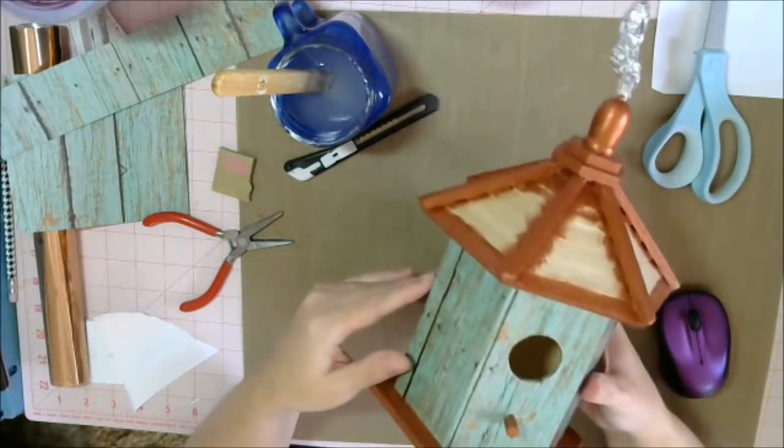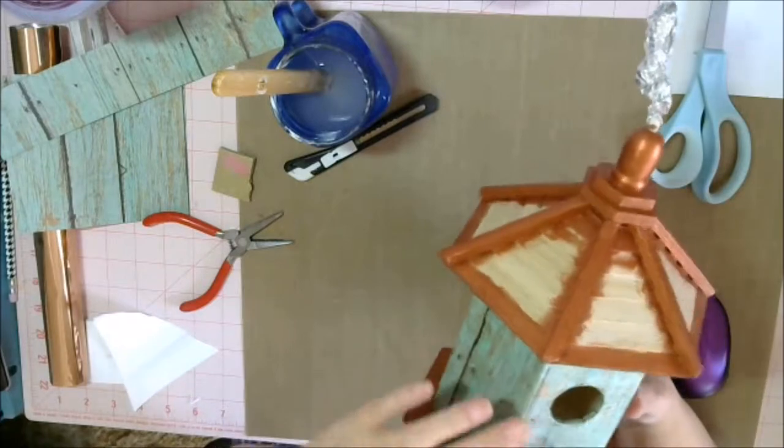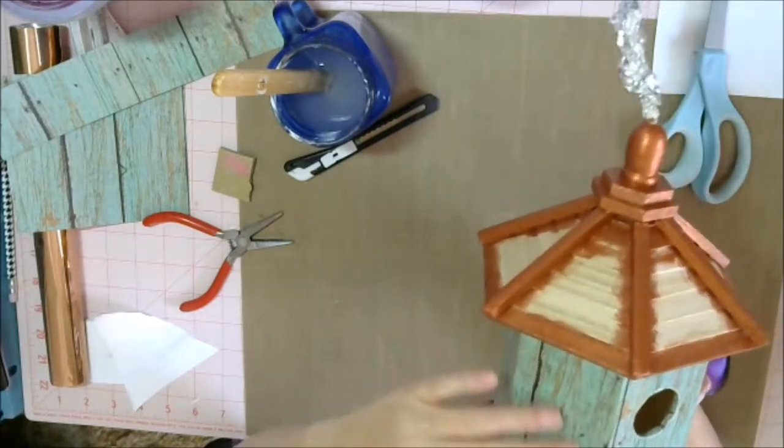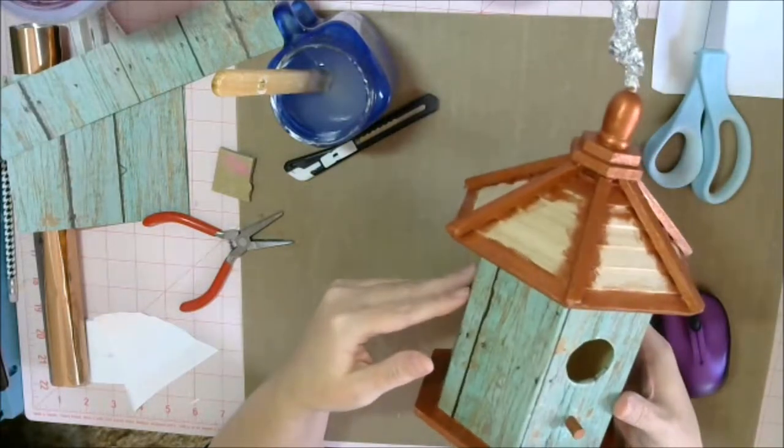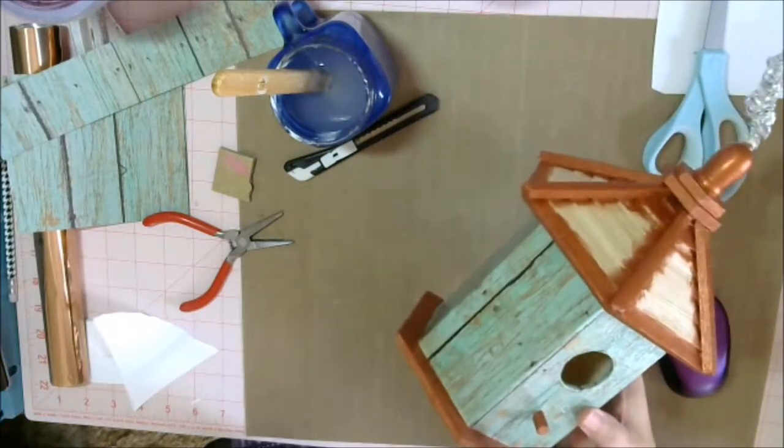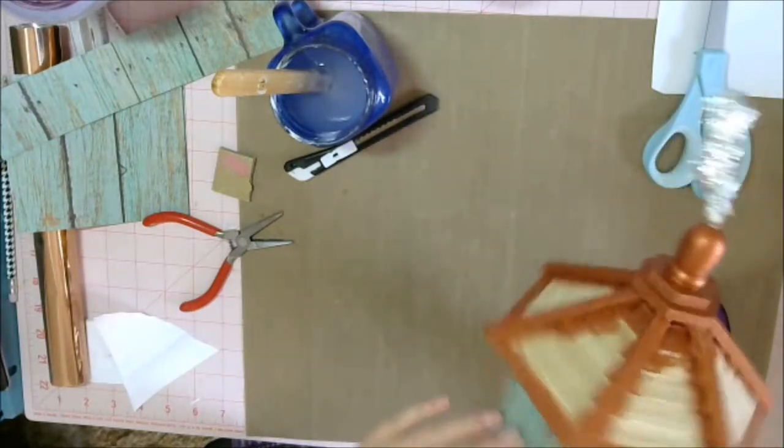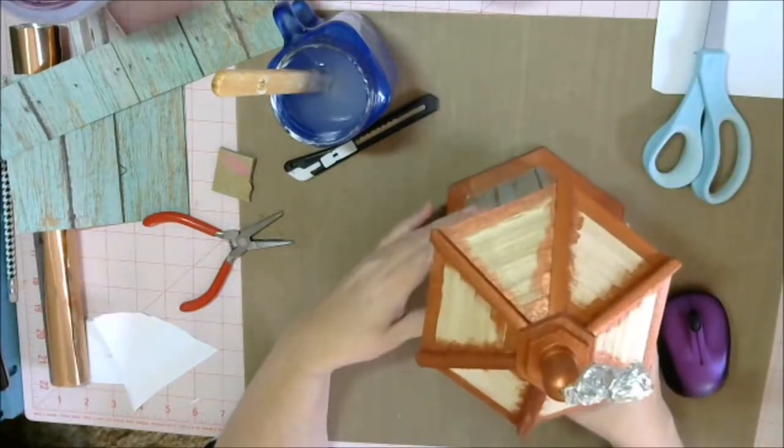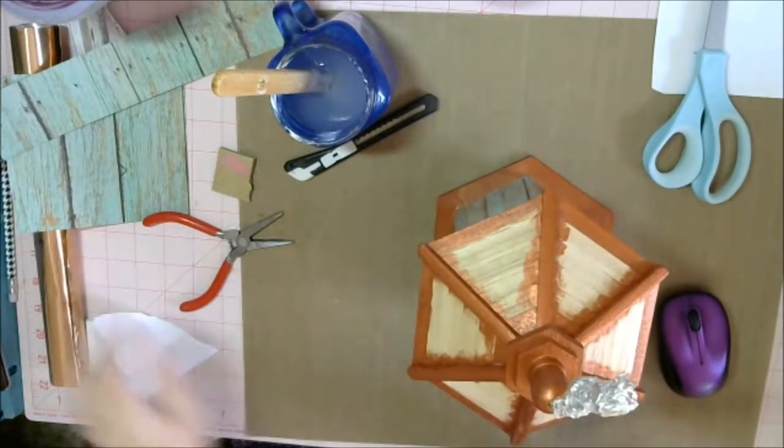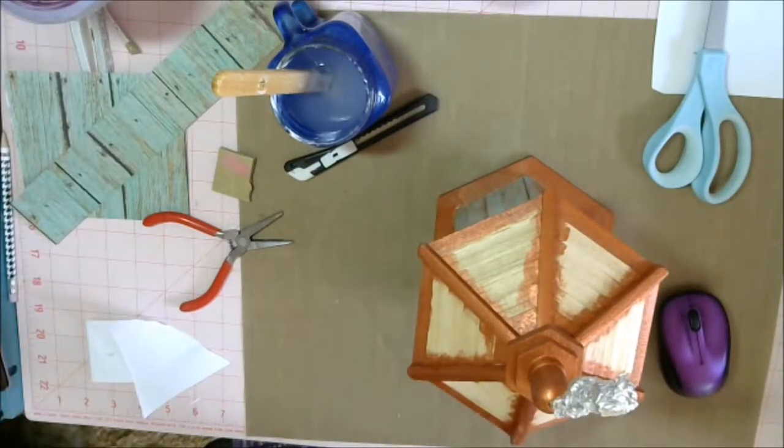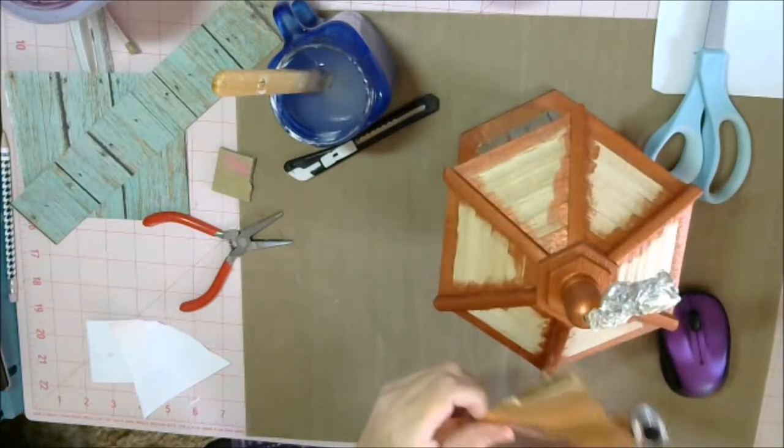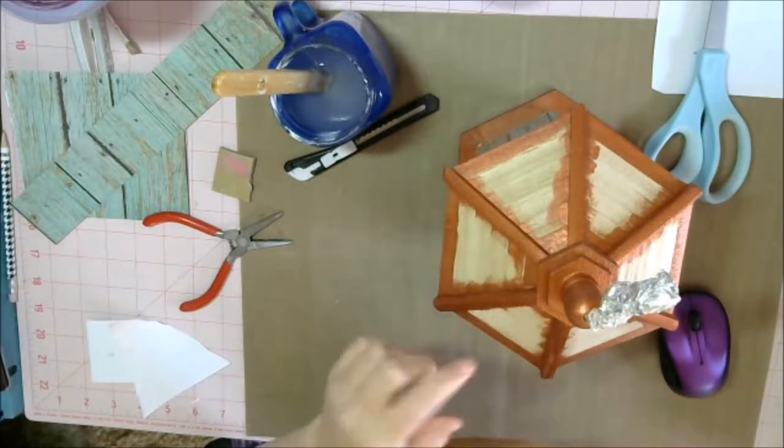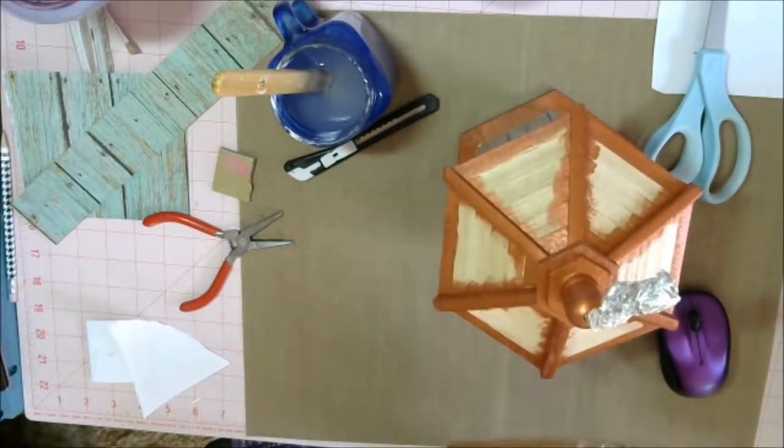Okay, now here's the birdhouse. I have a couple coats of the dishwasher safe Mod Podge which is also good for outdoor use. So this is pretty much dry - there's still a few damp spots where it's a little bit thicker. But I'm going to show you now what I'm going to do with the roof. I'm going to cover it with this copper foil, and I'm going to kind of shape it to the way the shingles are shaped on here.